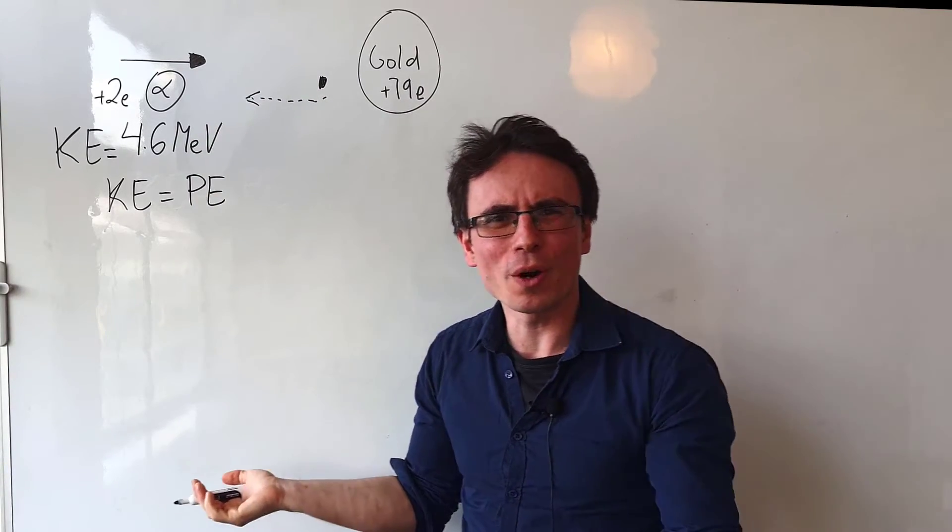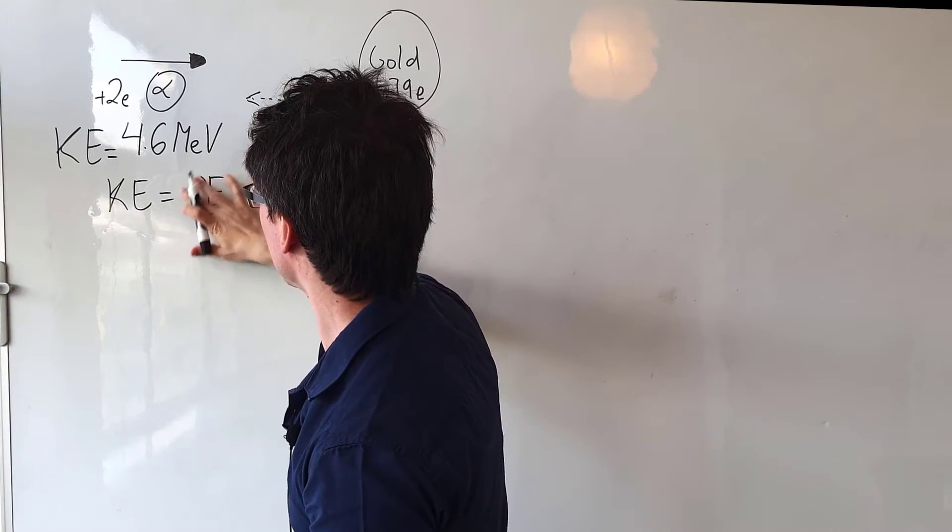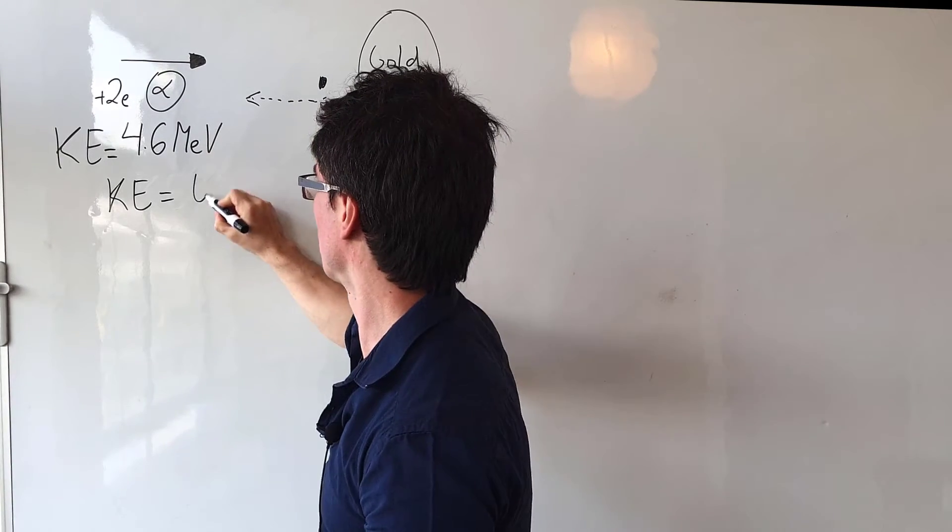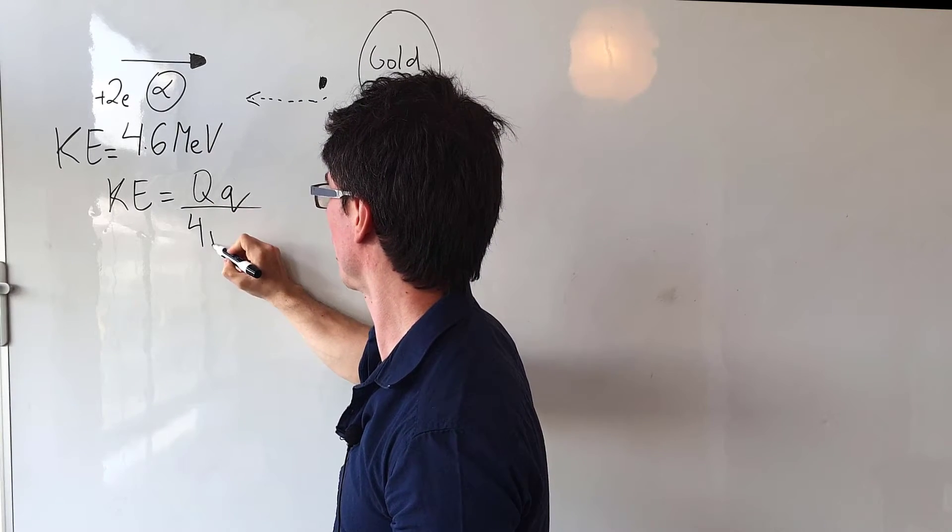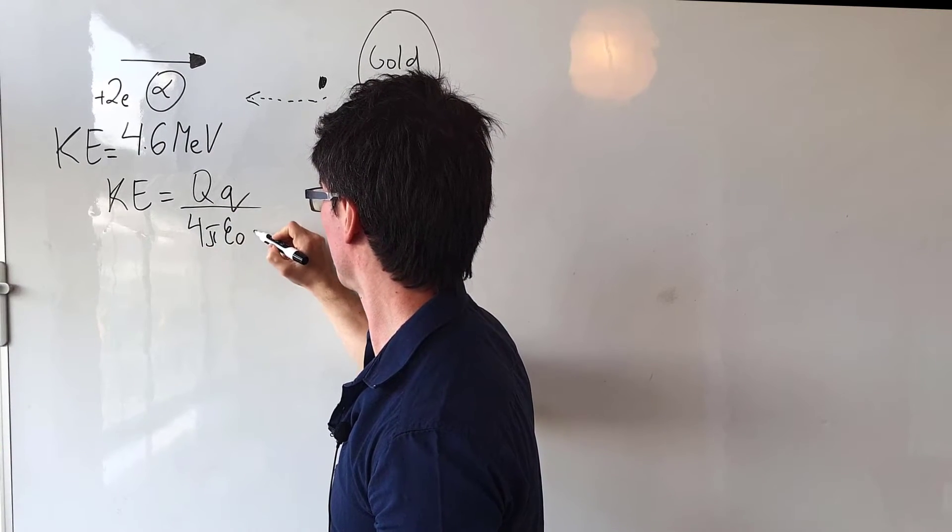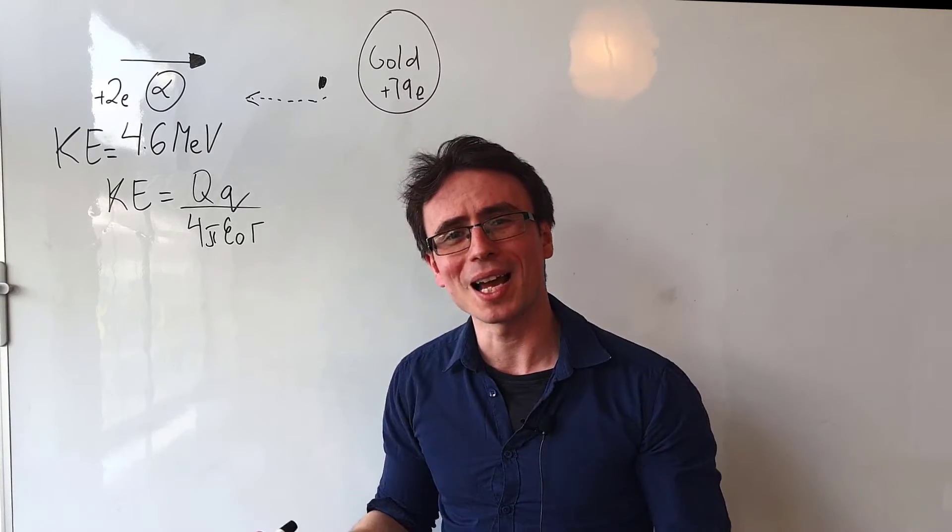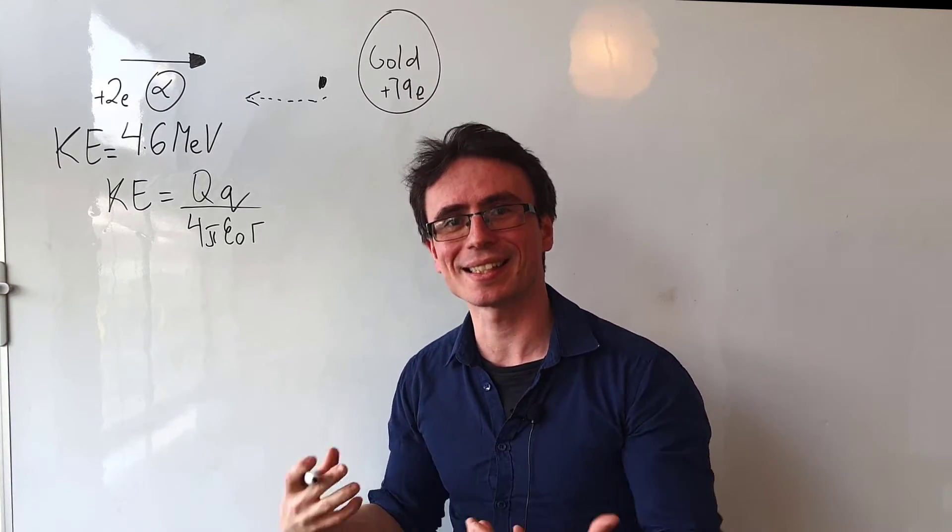What is the formula for potential energy? Remember, potential energy is essentially equal to one of the charges multiplied by the other one of the charges divided by 4π. Then we have a constant of epsilon naught multiplied by the distance r.